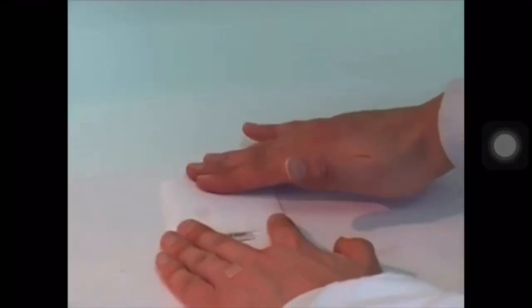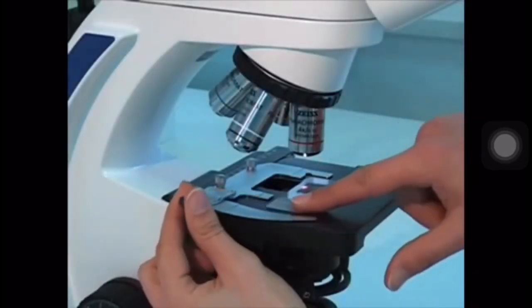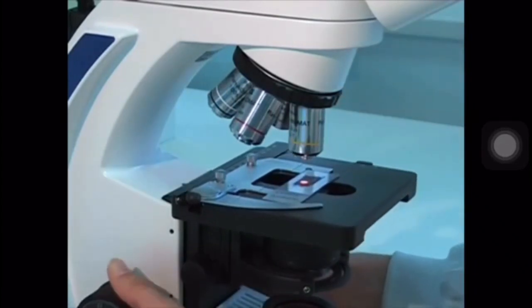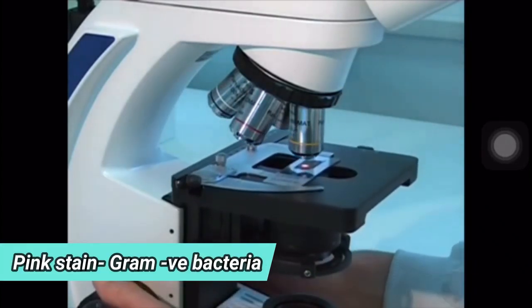After the slides are dried, it is then placed under the microscope to do the morphological test. A purple stain indicate a gram positive bacteria and a red or a pink stain indicate a gram negative bacteria.